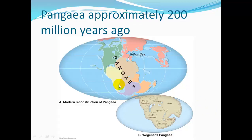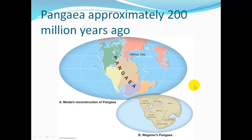Here's a diagram of Pangaea about 200 million years ago. Most of the continents we know — North America, South America, Africa, Australia, and India — were all attached together as one giant supercontinent. This is a modern reconstruction, along with a diagram from Wegener's original Pangaea.